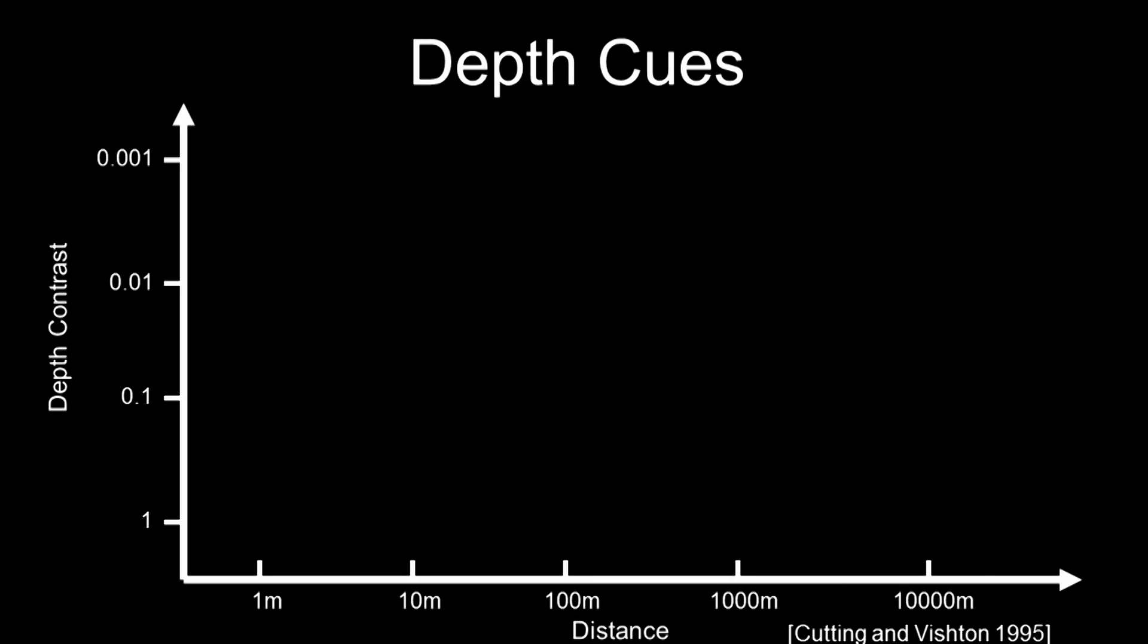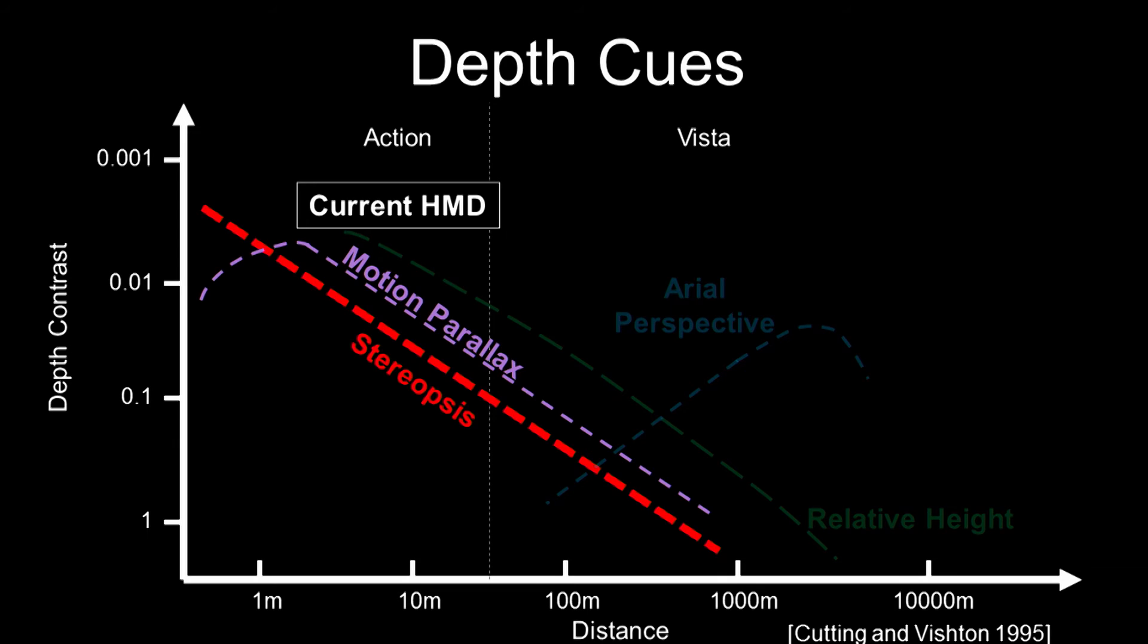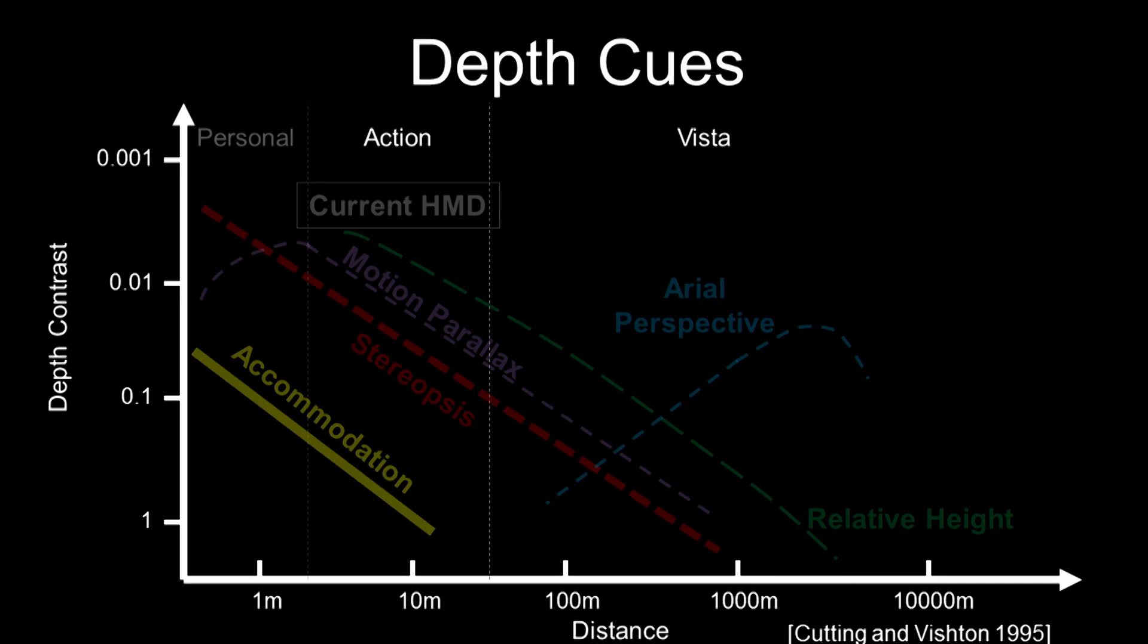But why do we even care about the problem? Here's a study showing the importance of different depth cues at different depths. When things are really far away, we use aerial perspective or relative height to determine the distance. When things get closer, we use motion parallax and stereopsis to discriminate the difference in depths. When things get really close, accommodation becomes the prominent cue for us to determine the true distance.